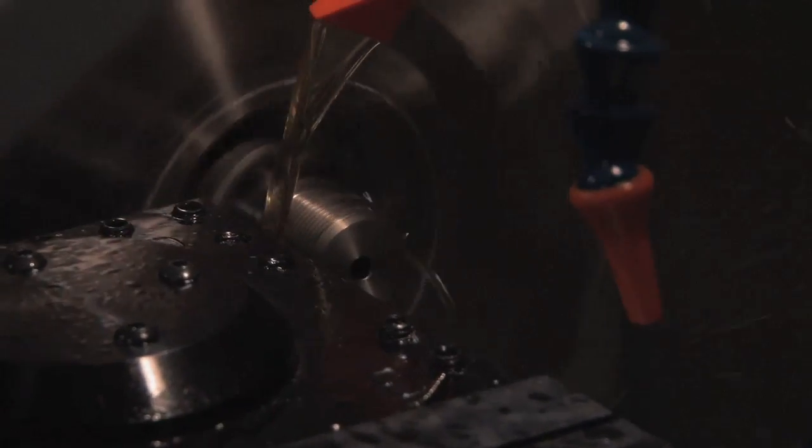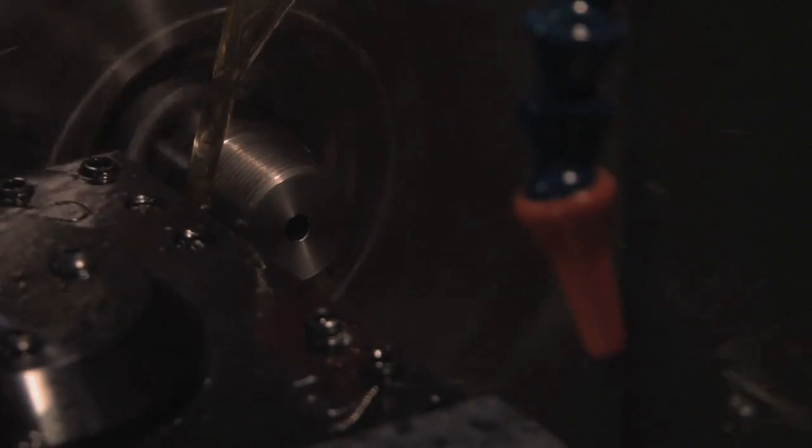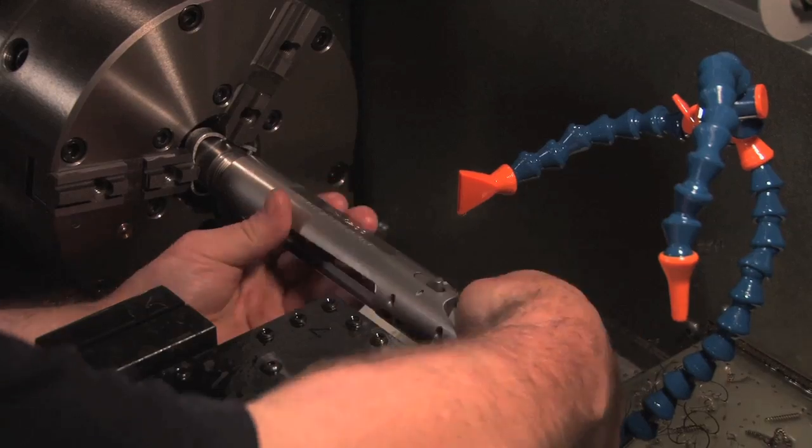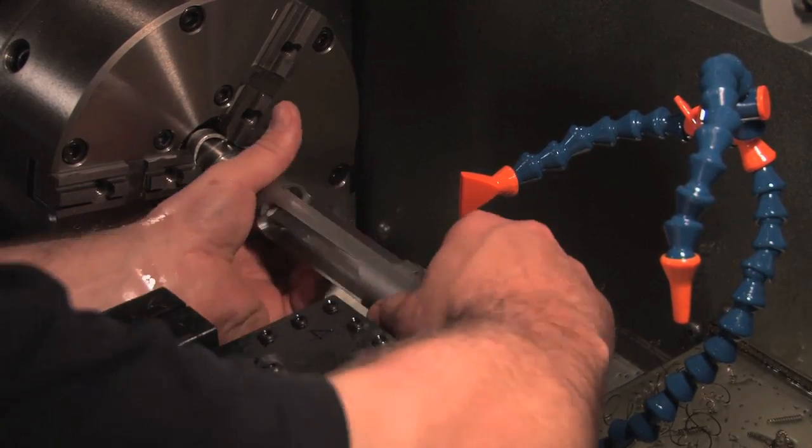Next, the barrel threads are cut at high RPMs for optimum surface finish. Finally, the boring tool cuts the counter bore recess for the bolt nose. The Gunworks action is test fit to the thread.